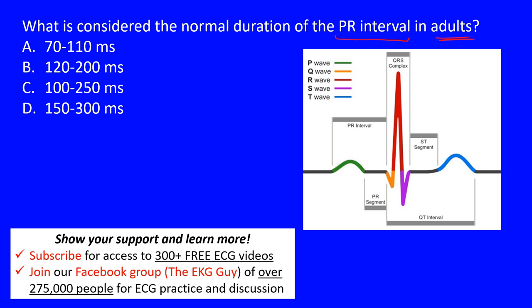Let's go over the cardiac cycle. This is a normal cardiac cycle. Here in green is our P wave. The Q wave is that first negative deflection shown in orange. The R wave is noted here in red. The S wave is the negative deflection after the R wave — a positive deflection — shown here as well.